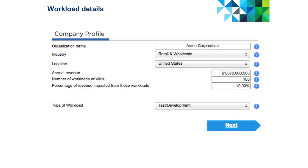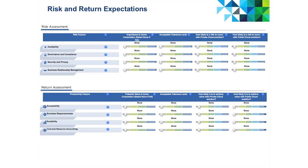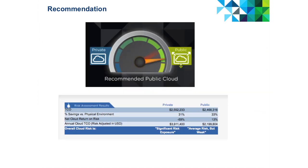You will start by entering your workload details into the Cloud Compass and answering a series of questions that will assess your risk and return expectations. The Cloud Compass will then take your inputs into account and make a recommendation on a cloud solution for your workloads.